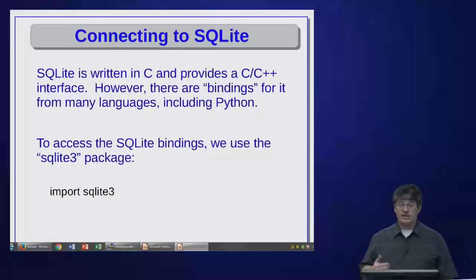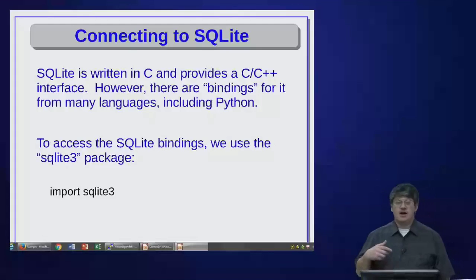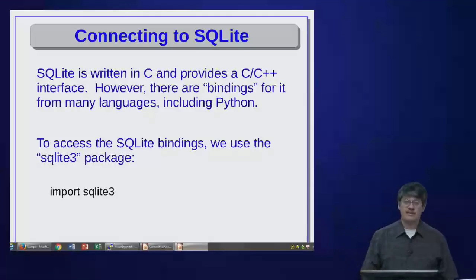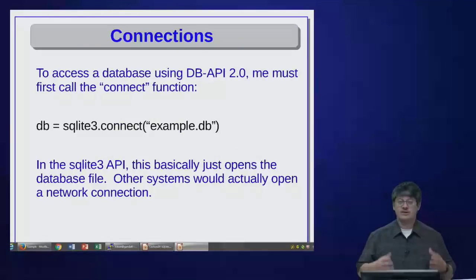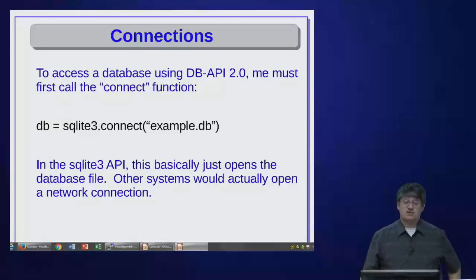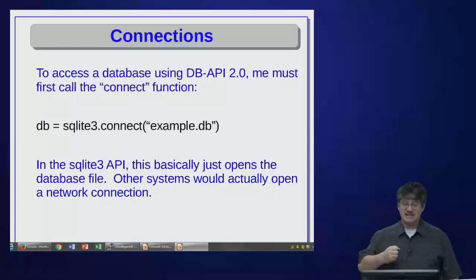To connect SQLite to a script: SQLite was written in C and is designed to be used with C or C++ programs, but there are bindings that wrap the C library for other languages. There's a Python binding package that lets us access SQLite from Python. To use it, just say 'import sqlite3' in your Python script. DB-API 2.0 says the first thing we do is call a connect function: sqlite3.connect() passing in the database filename as a string, which returns a database connection object.